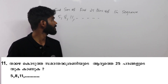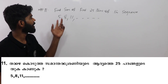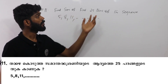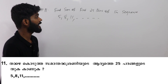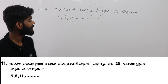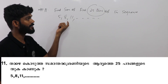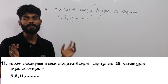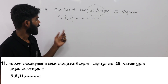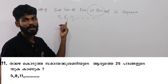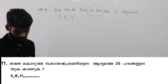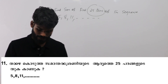The next question is: find the sum of the first 25 terms of the sequence. We are looking at the sum of the first 25 terms of the arithmetic sequence 5, 8, 11, and so on.